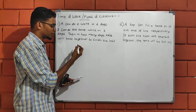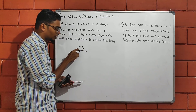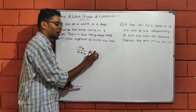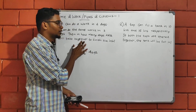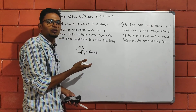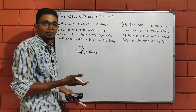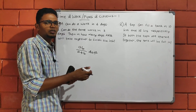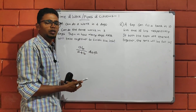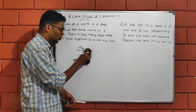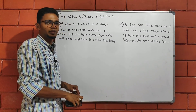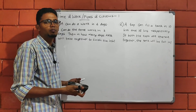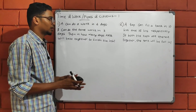A and B will complete the work together in A times B divided by A plus B days. There are two methods: one is the fractional method and one is the LCM method. The LCM method is a little bit easier and more comfortable to use.